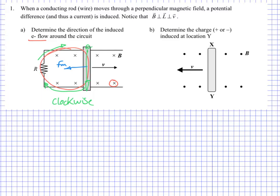Let's look at example B. Slightly different scenario this time. We are given an X and a Y, and there's no circuit, but what would happen is that you would have an accumulation of charge. So we need to figure out which way the electrons would travel — which way they would be induced — and then whether they would accumulate at X or Y. Since they have nowhere to go, they're just going to accumulate. Same principle: the motion is to the left, and remember Lenz's Law — if the motion is to the left, the force experienced by those charges is going to be to the right. It's opposite.